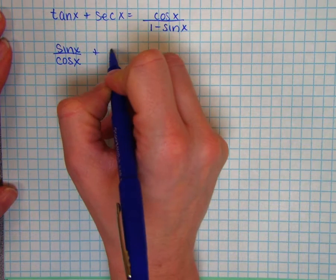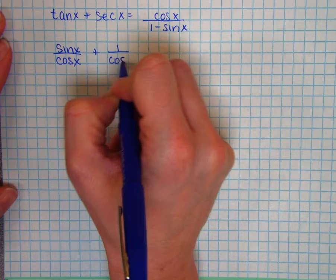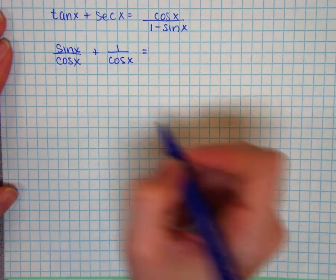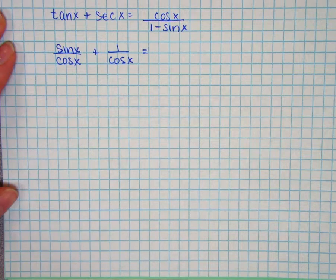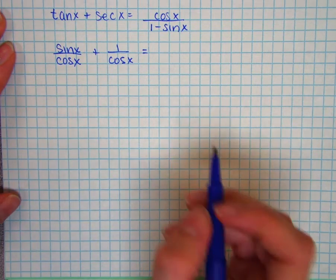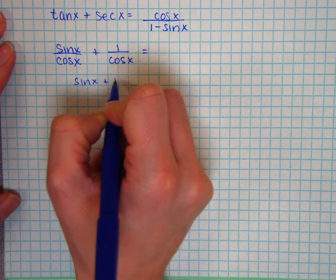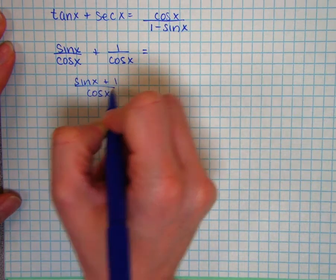So I have sine over cosine plus 1 over cosine. And then I'll combine these fractions because we're going toward an expression that is just one term. So this gives me sine of x plus 1 over cosine of x.